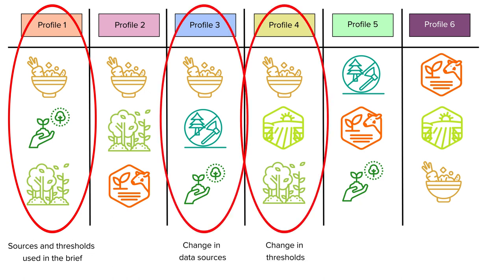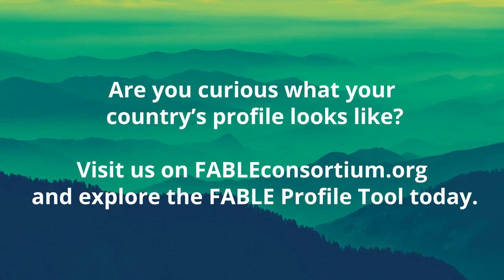This highlights the importance of reliable national data and targets so that countries can identify the right key actions when moving towards a food and land mitigation action agenda. Are you curious what your country's profile looks like? Visit us on fableconsortium.org and explore the FABLE profile tool today.